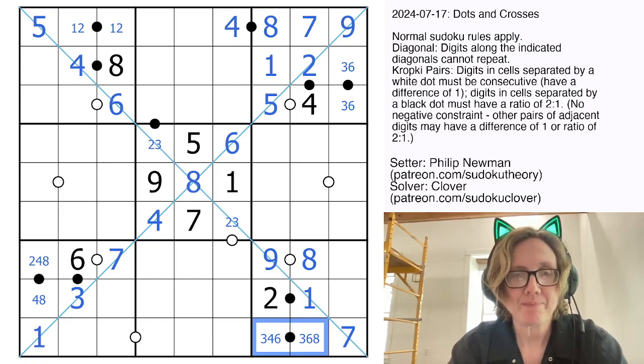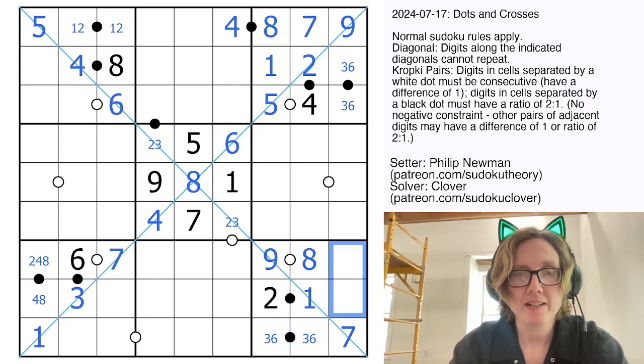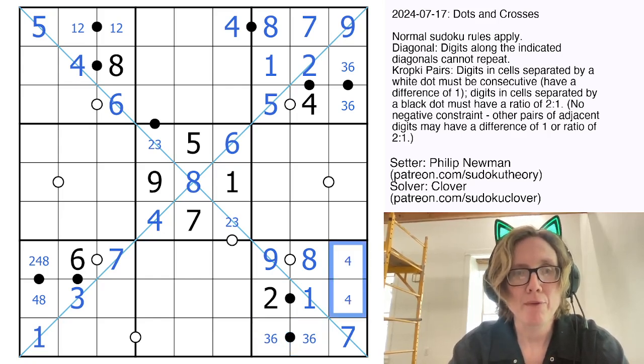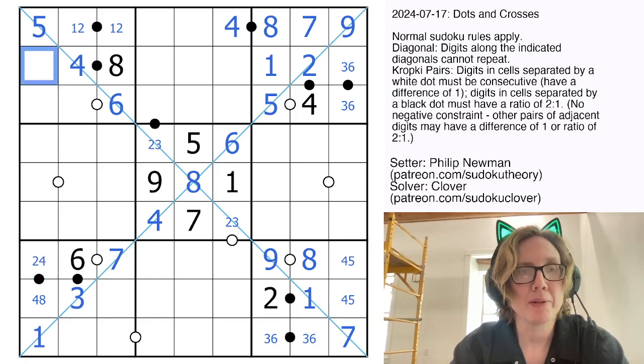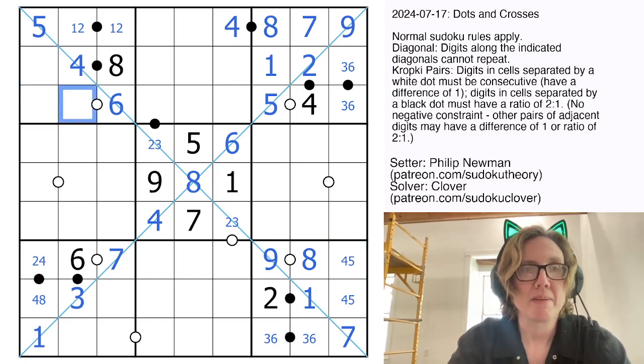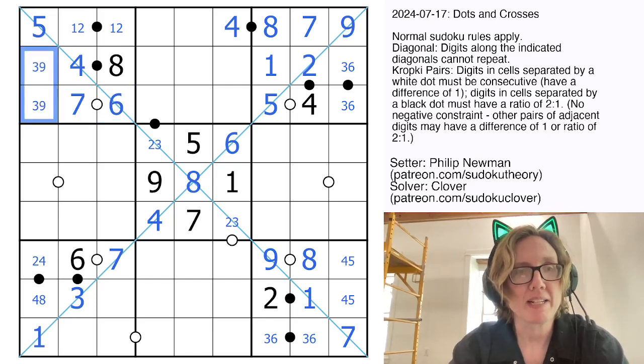Because I just placed an 8 there, this can no longer be a 4, 8 pair, so that is a 3, 6 pair. And these two digits are 4 and 5. This can't be an 8 because of the 8 in the row. I need a digit that's consecutive with 6 that's going to make this a 7 because there's a 5 in the region now. This will have to be a 3, 9 pair.